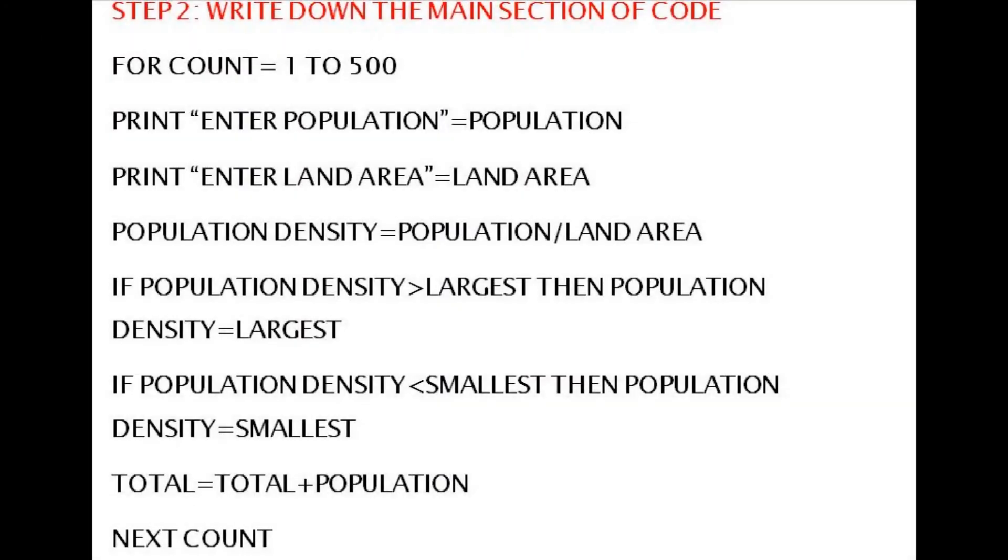Step 2: Write down the main section of the code. We start off by for count equals 1 to 500. And then we go on to print in commas, enter population equals population. And then print in commas, enter land area equals land area. Population density equals population divided by land area.